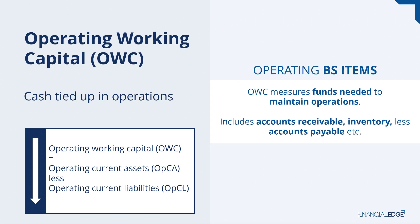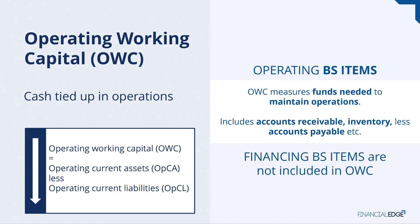It's important to realise that all of these are operating balance sheet items. We're not going to be including financing balance sheet items — they are not included in OWC. Things like short-term and long-term debt, loan notes, revolvers, and overdrafts might provide funding to the business, but they're not cash tied up in operations. Instead, we get those figures from things like accounts receivable, inventory, and accounts payable.